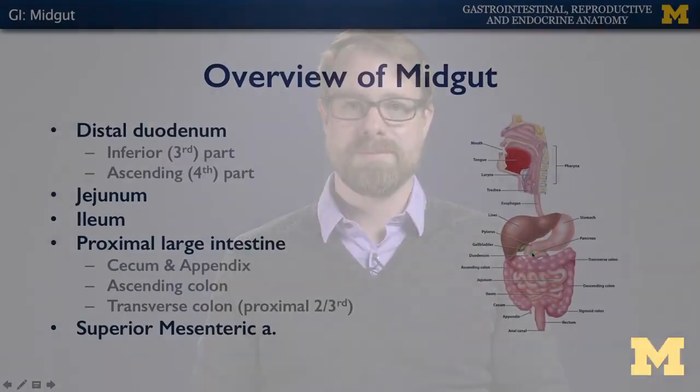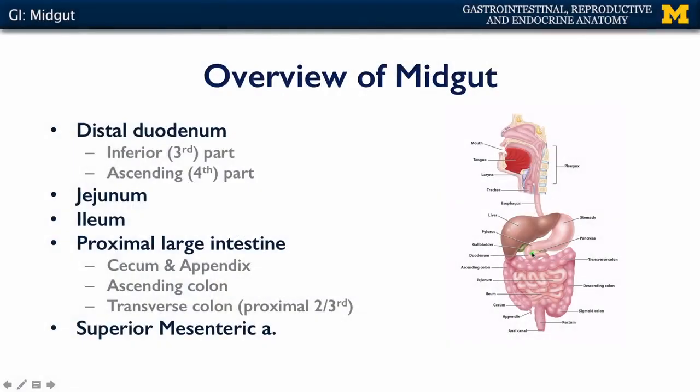Let's talk about the midgut. The midgut consists of the distal duodenum — the third and fourth parts — the remainder of the small intestine, and a good bit of the large intestine as well.